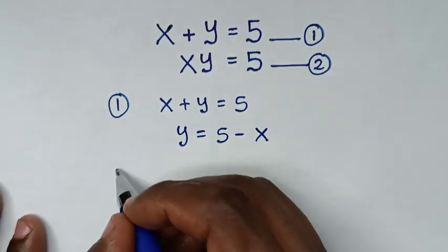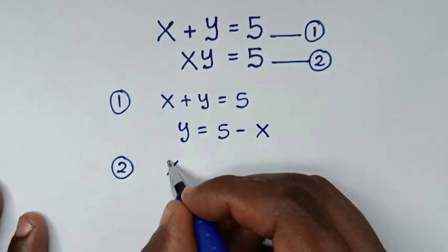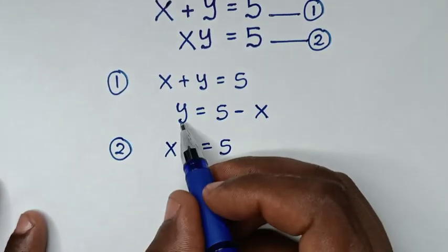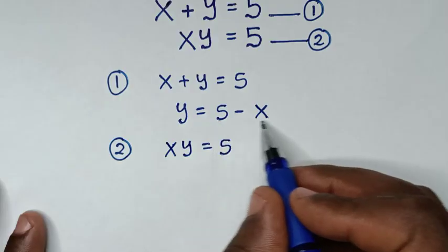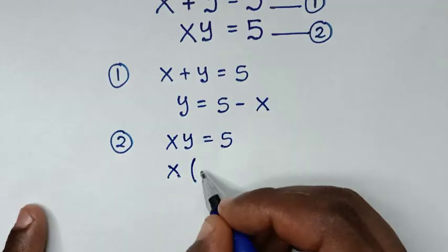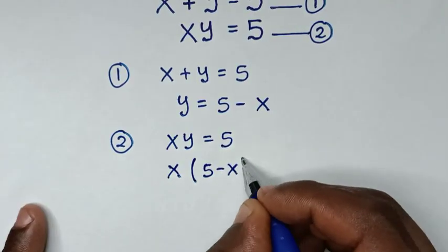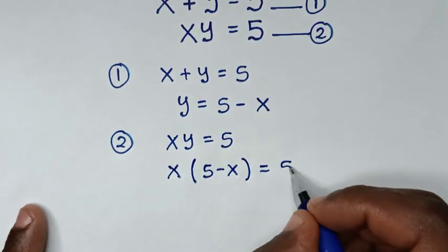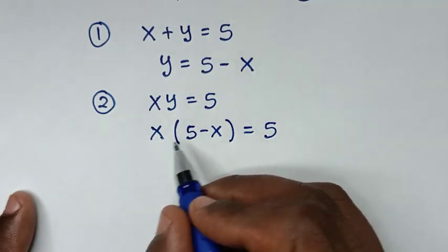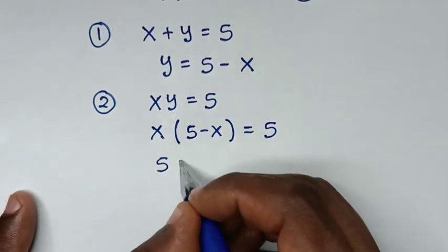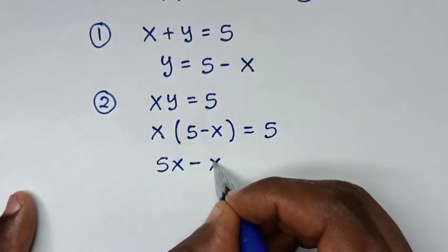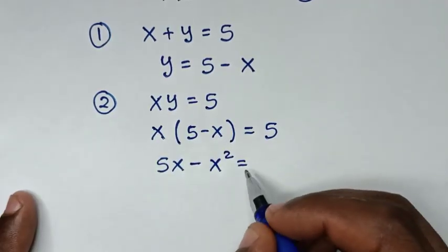From equation 2, which is xy equals 5, we substitute the value of y, which is 5 minus x. So it becomes x times (5 minus x) equals 5. Expanding, that gives 5x minus x squared equals 5.